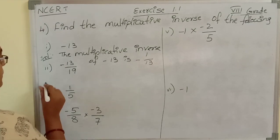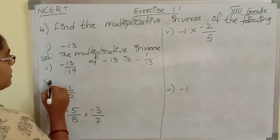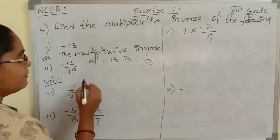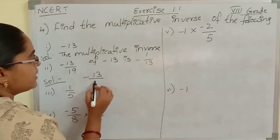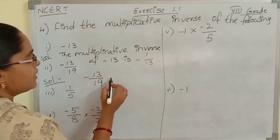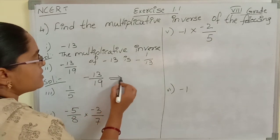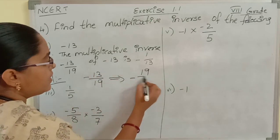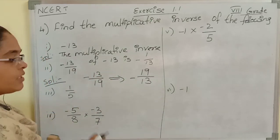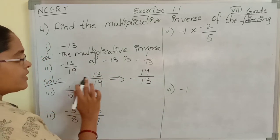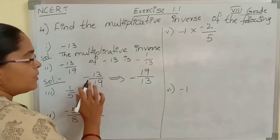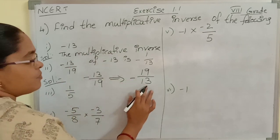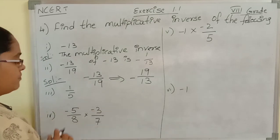Now see the second one: what is the multiplicative inverse of minus 13 by 19? Our number is minus 13 by 19, and its reciprocal is minus 19 by 13. Remember: the symbol won't be changed. If it is a negative number, its reciprocal will also be negative.